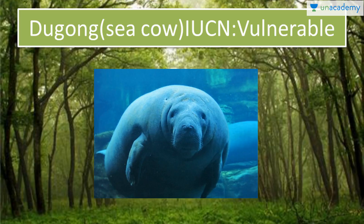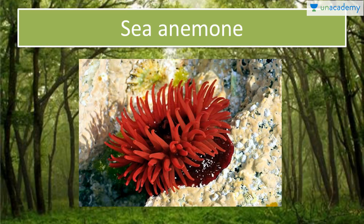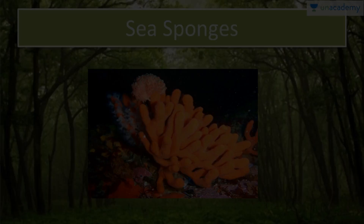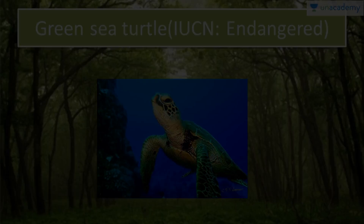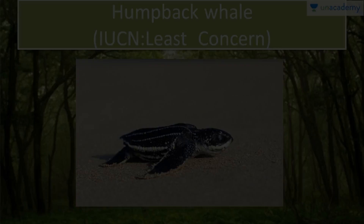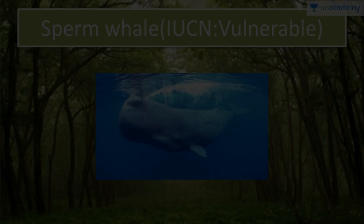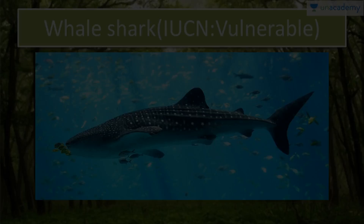Sea anemone, sea sponges and jellyfish are species found at Marine National Park of Gulf of Kutch. Green sea turtle is endangered as per IUCN. Leatherback turtle is vulnerable as per IUCN. Humpback whale is of least concern as per IUCN. Sperm whale is vulnerable as per IUCN. Olive ridley sea turtle is vulnerable as per IUCN. Whale shark is also vulnerable as per IUCN. And here is the bottlenose dolphin.